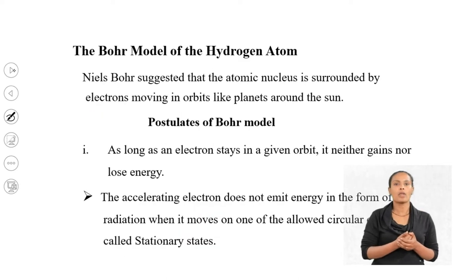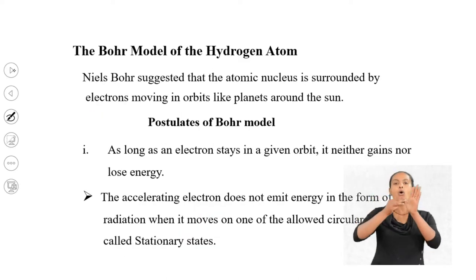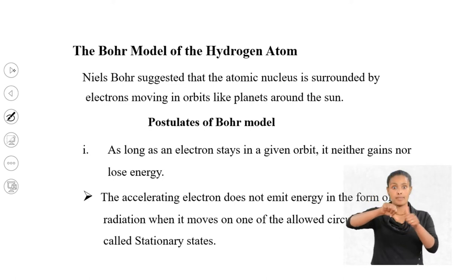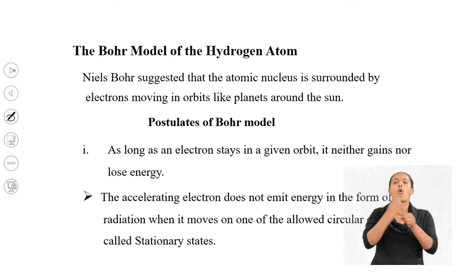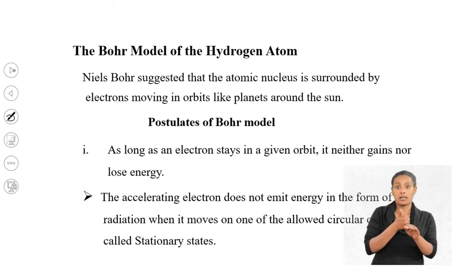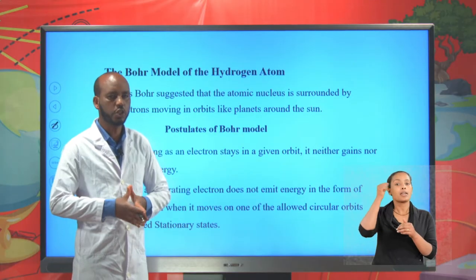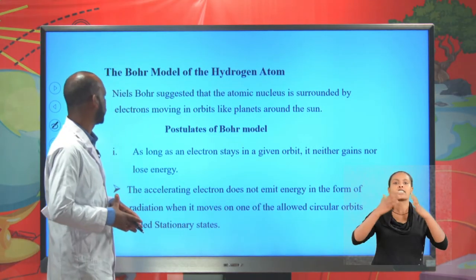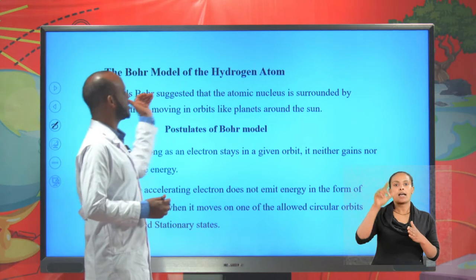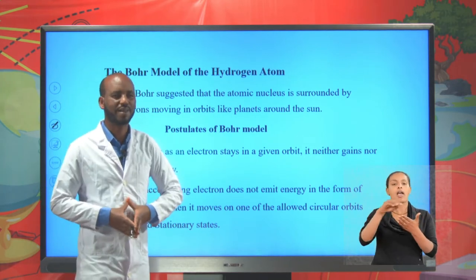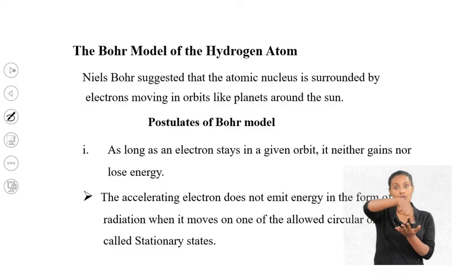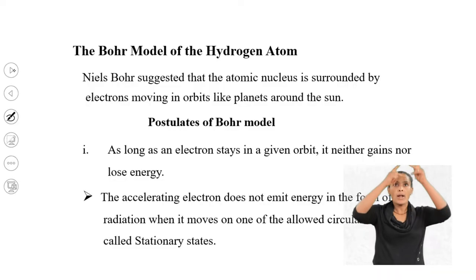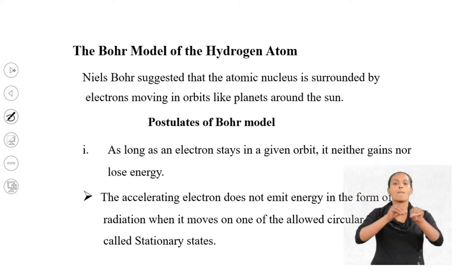The Bohr model of the hydrogen atom. Niels Bohr, who worked with Ernest Rutherford, was a Danish physicist. Niels Bohr suggested that electrons are revolving around the nucleus, just like planets revolving or moving around the sun.